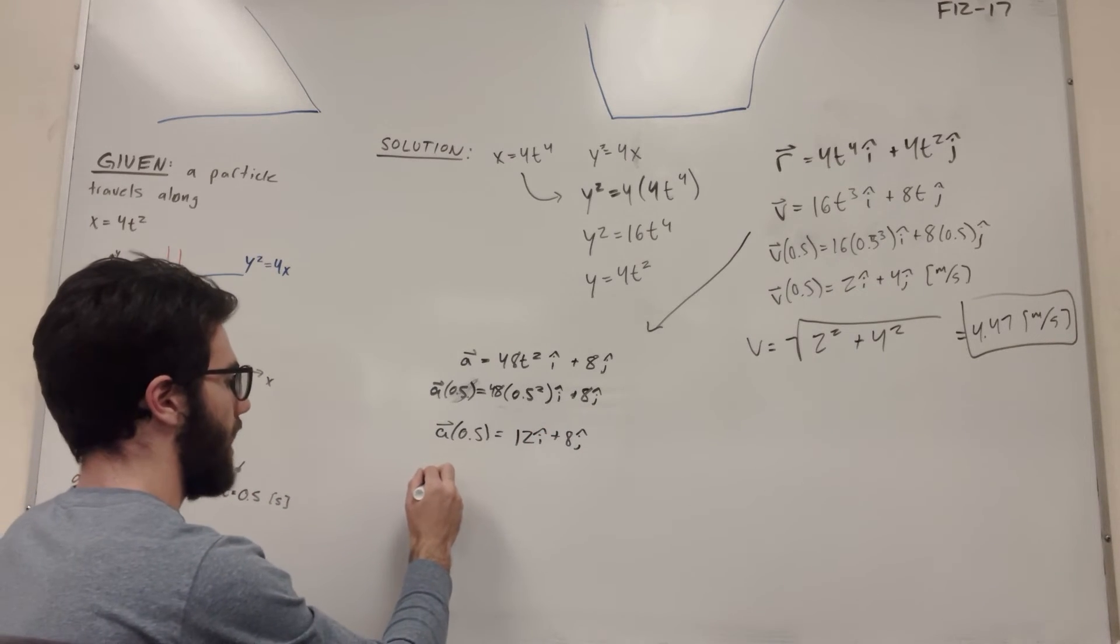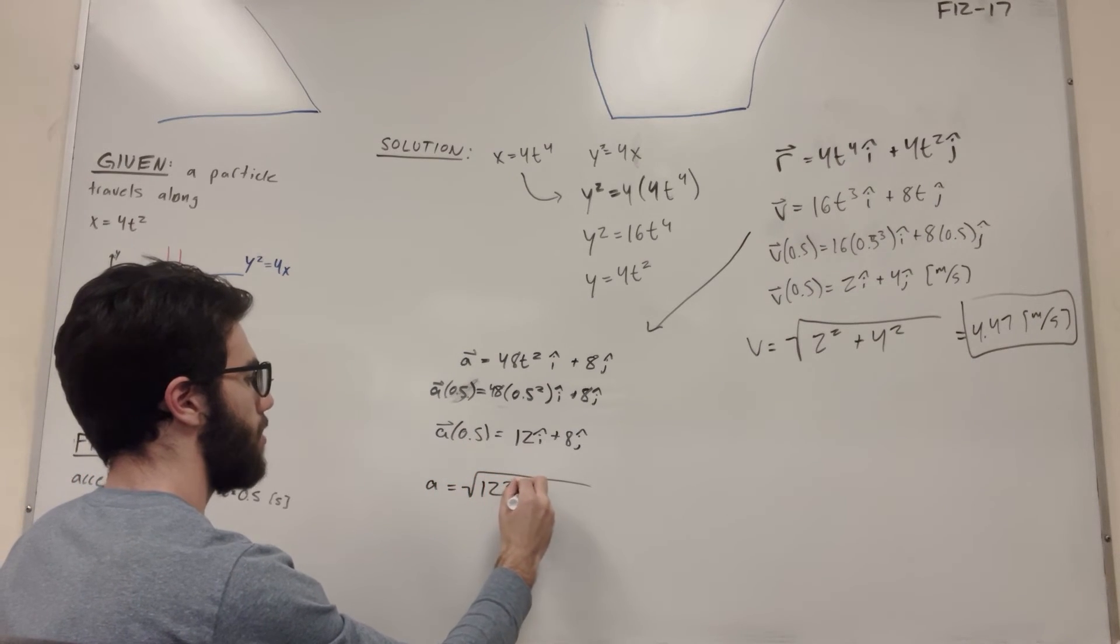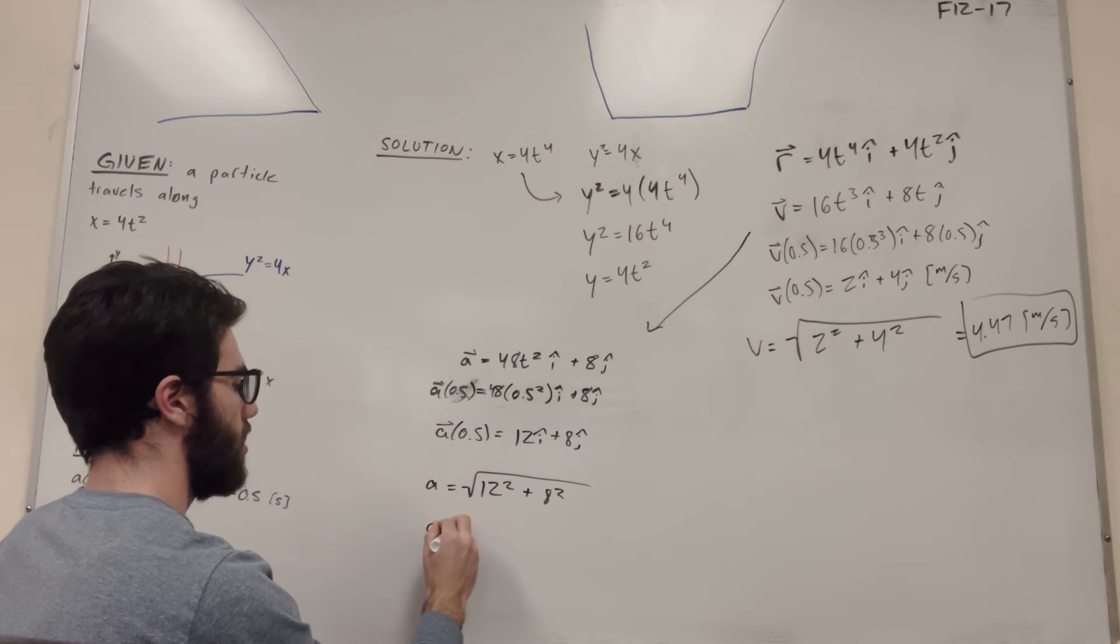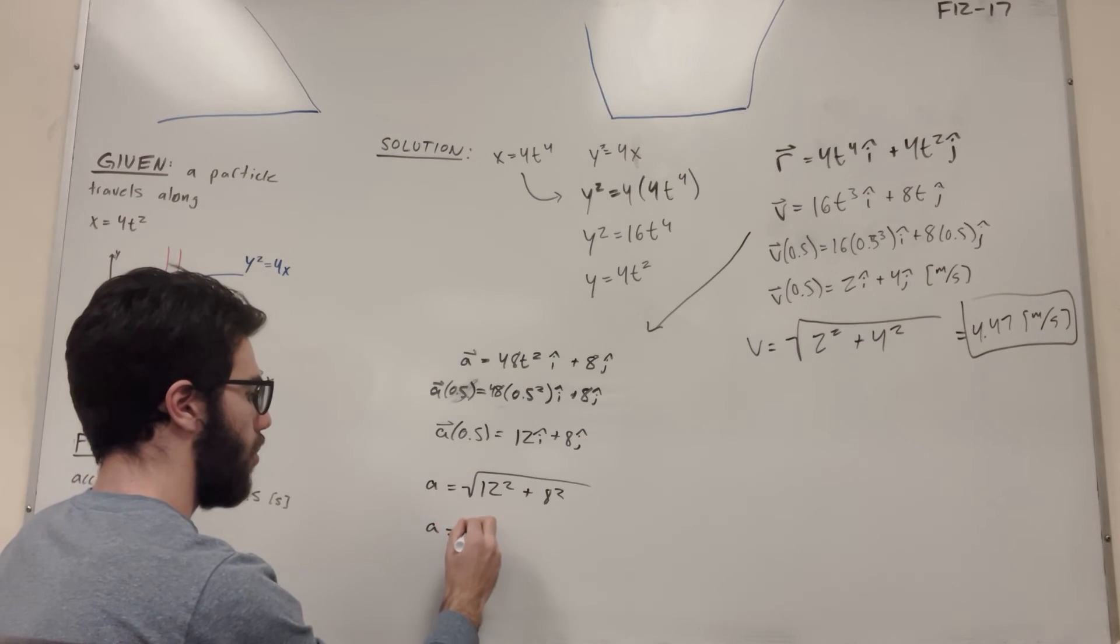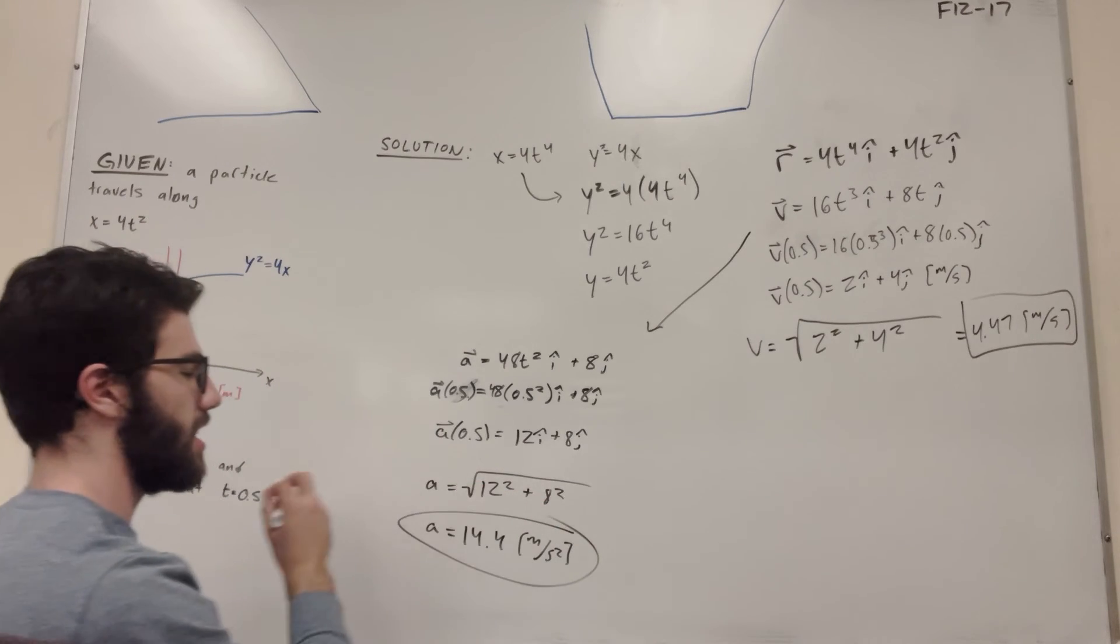So now let's find the magnitude of it. So a equals the square root of 12 squared plus 8 squared. Do this, and you're going to get 14.4 meters per second squared. And there's your second answer.